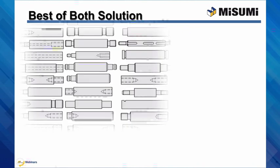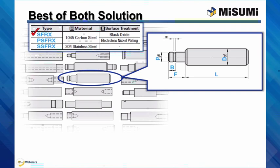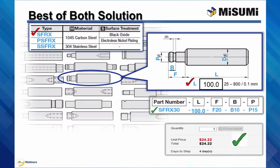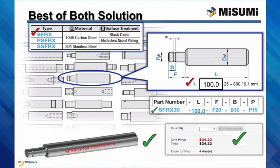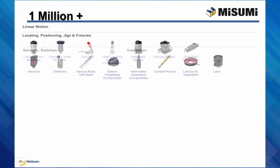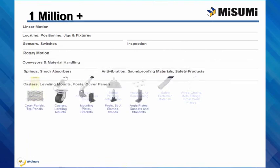Configurable components are easy to design with and purchase. Online, select the product geometry desired, the material and surface finish, and input the size for each configurable dimension within the range and increments shown. You'll get a smart part number, instant price and days to ship, and the CAD model. All of this configurability is available with over 1 million components available at MisumiUSA.com.